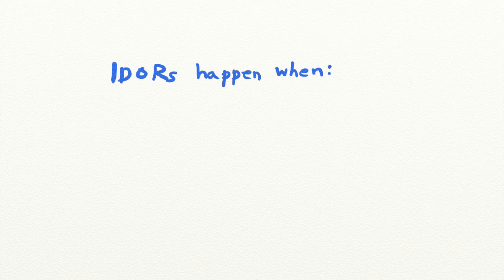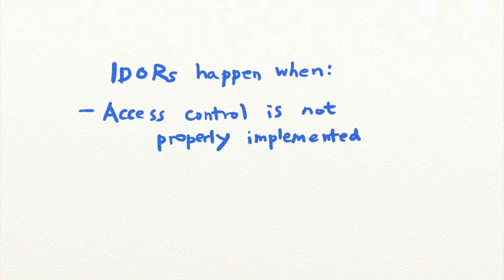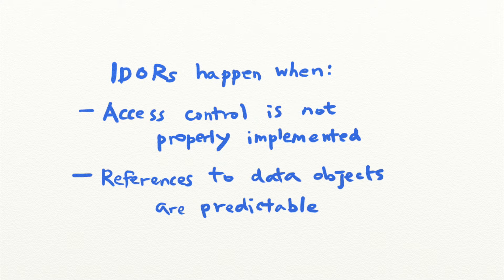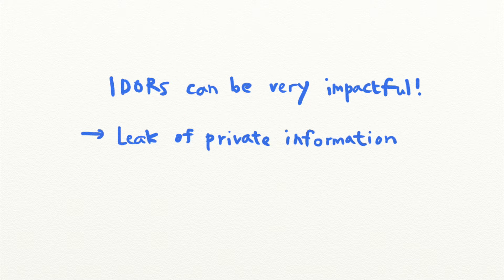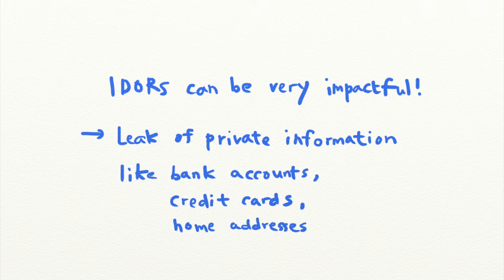To recap, IDORs happen when access control is not properly implemented and when the references to data objects like a file or a database entry are predictable. This causes users to be able to access other users' information and is a serious vulnerability that can lead to data leaks.